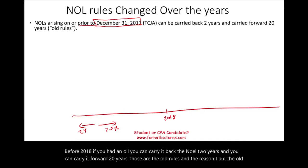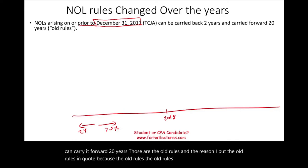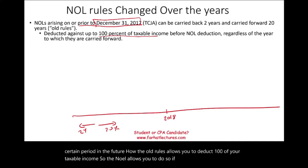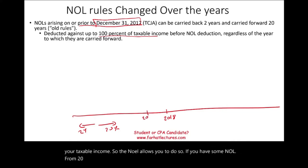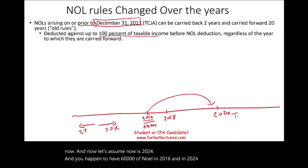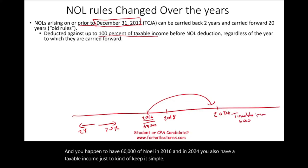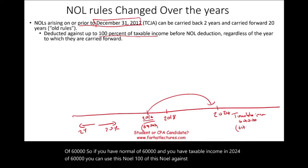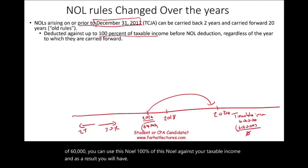Under the old rules, you can deduct 100% of your taxable income using the NOL. For example, if you had an NOL from 2016 and you are now in 2024, and you have $60,000 of NOL from 2016 and $60,000 of taxable income in 2024, you can use 100% of that NOL against your taxable income, resulting in taxable income of zero.